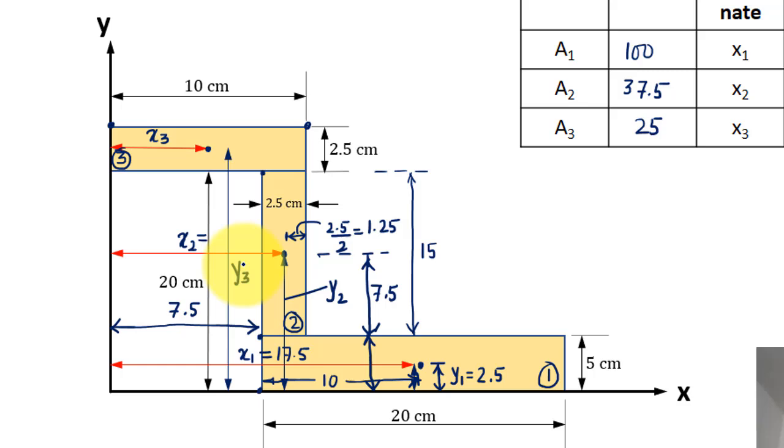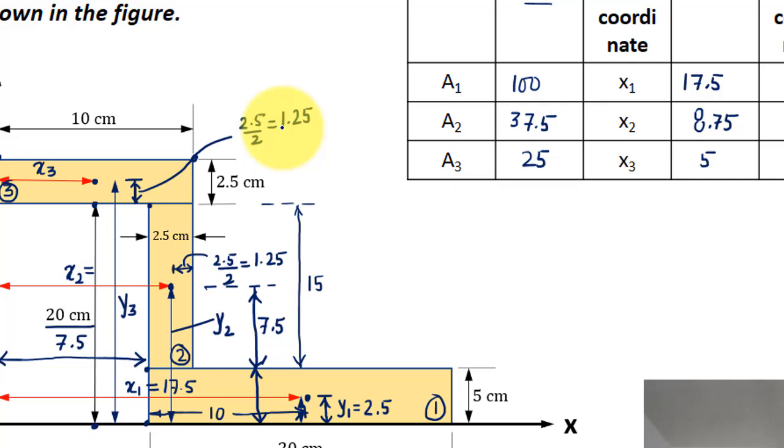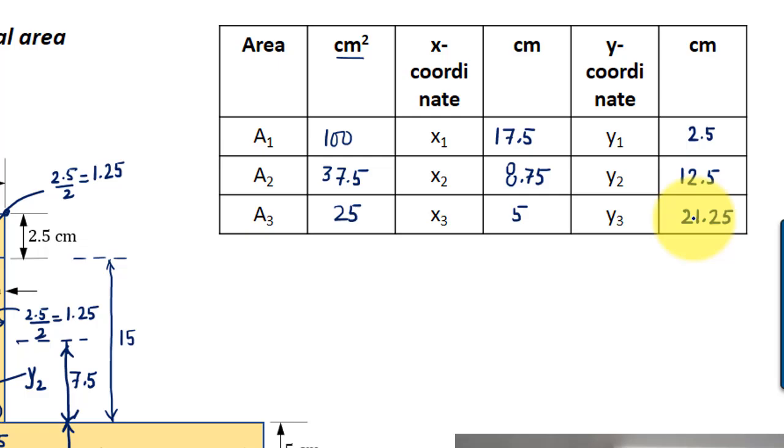Finally we have to deal with this y3. The total distance from here till we reach here is 20. So you just need to add this distance to 20. This distance is nothing but 2.5 divided by 2, which is going to work out as 1.25. So that's 20 plus 1.25, which will give you 21.25.